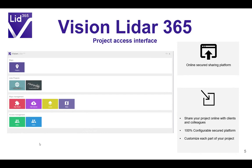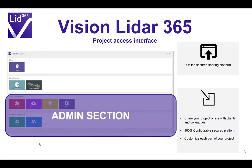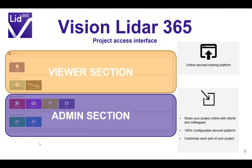About Vision LiDAR 365: it is an online viewer platform which allows you to share your project remotely with your clients or even your colleagues. You will be able to configure and customize each part of your project to show what is needed for your work. At the bottom, we have the admin section, where you have total control over how you create and mount your projects on the platform and select the access rights for each client. On top, you have the viewing section, which the client will have access to — they will be able to see the projects for which you have granted them access.